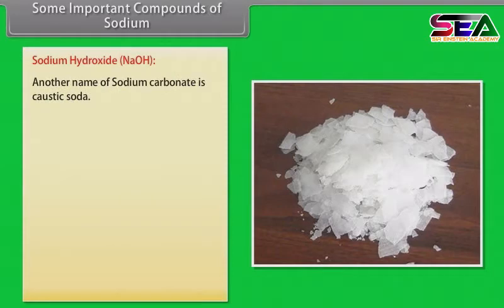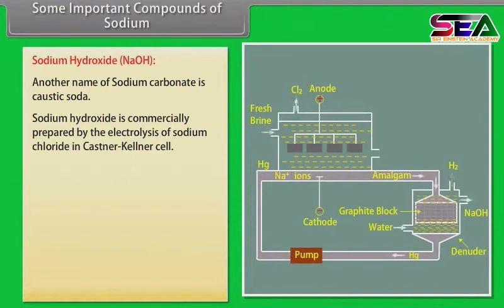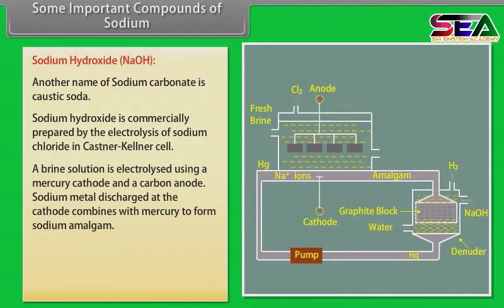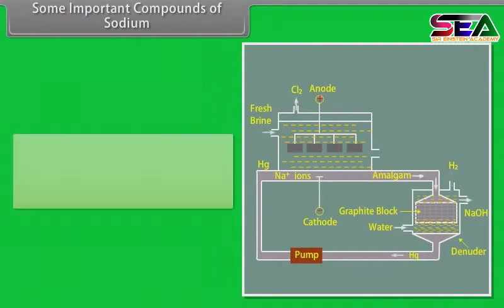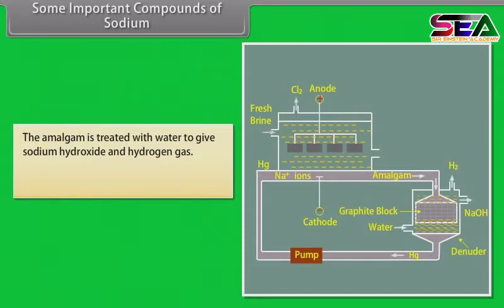Hydrogen chloride gas saturates the solution and crystals of pure sodium chloride separate out. Sodium hydroxide, another name of which is caustic soda, is commercially prepared by the electrolysis of sodium chloride in a Castner-Kellner cell. A brine solution is electrolyzed using a mercury cathode and a carbon anode. Sodium metal discharged at the cathode combines with mercury to form sodium amalgam, which is then treated with water to give sodium hydroxide and hydrogen gas.